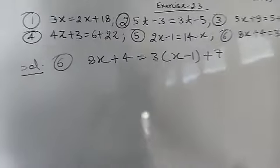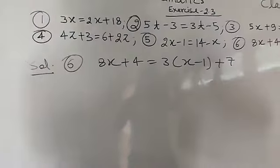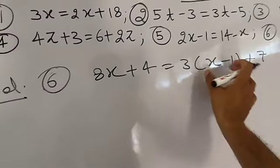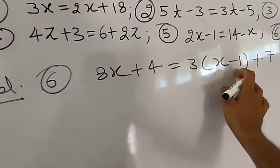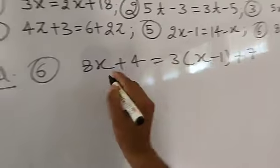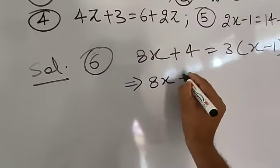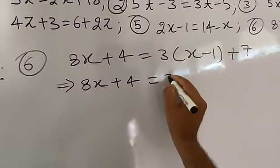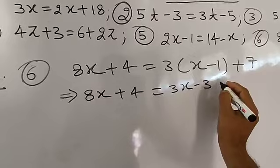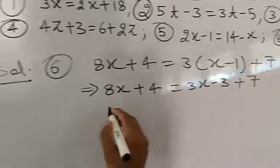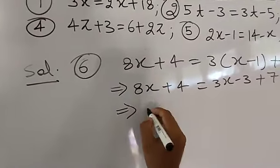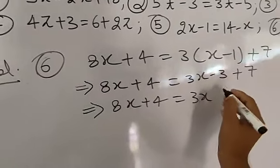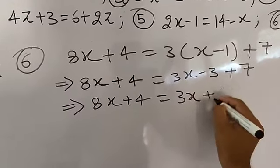Now I have written question number 6 and I am going to give its complete solution. On the right side there is a bracket with 3 in front and no sign, which means 3 is going to be multiplied. Multiplying: 8x plus 4 equal to 3 into x which is 3x, and 3 into minus 1 is minus 3, plus 7. So it becomes 8x plus 4 equal to 3x plus 4, since 7 minus 3 equals plus 4.